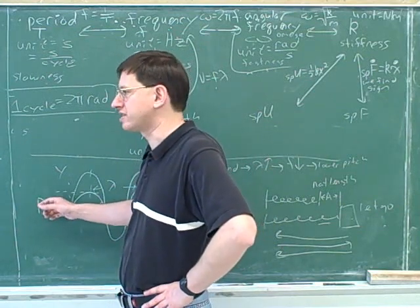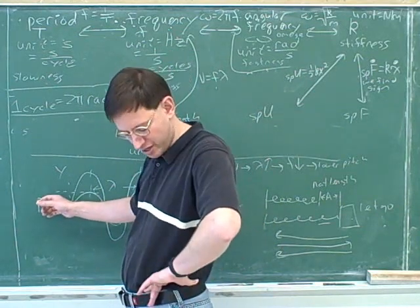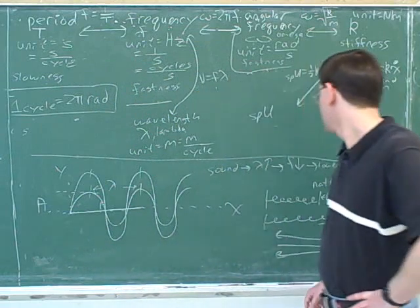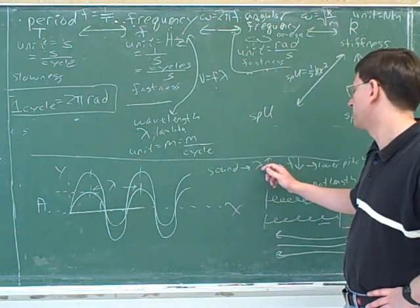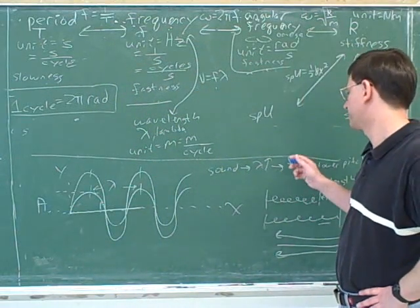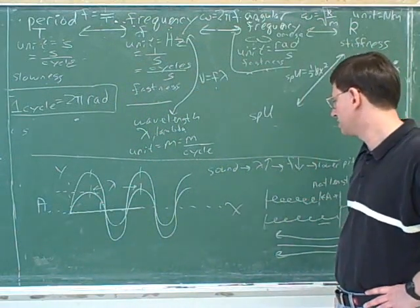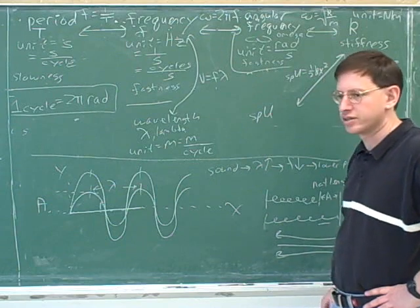For sound, amplitude is a measure of how loud it is. For sound, frequency and wavelength are related to pitch. But for light, they're related to color.